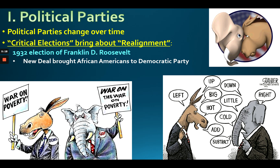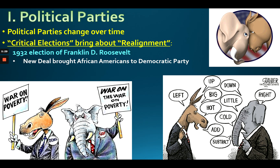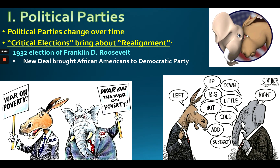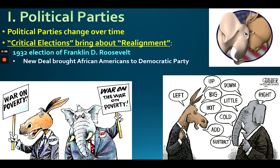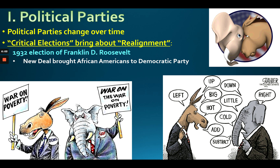Another example of realignment is when Southern racists left the Democratic Party and started voting Republican in the 1960s, following the Civil Rights Act of 1964 under Lyndon Johnson. Then in 1994, the white working class left the Democratic Party and started voting Republican. Democrats used to be the party of labor unions and the working man; Republicans used to be the party of Wall Street business types — it's just not like that anymore.